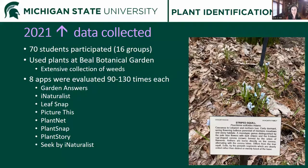We compared eight different apps, and instead of evaluating each app with 10 to 12 plants, here we were evaluating each app with 90 to 130 plants. The apps we looked at included Garden Answers, iNaturalist, LeafSnap, PictureThis, PlantNet, PlantSnap, PlantStory, and Seek — which is a product of iNaturalist.